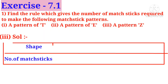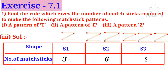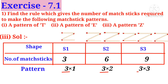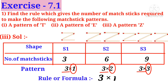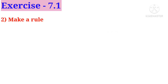Third solution: a pattern of Z. In first shape, one Z is formed using magic sticks; in second shape, two Z's; in third shape, three Z letters are formed. In first shape, three magic sticks are used; in second shape, six; in third shape, nine. The pattern is: 3×1, 3×2, 3×3. The first number three is constant and the second numbers one, two, three are changing. So the rule or formula is three into n.